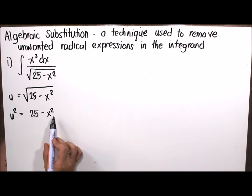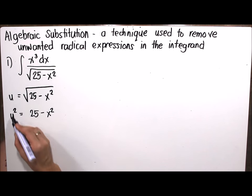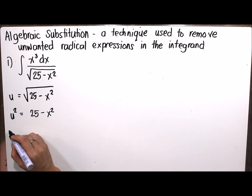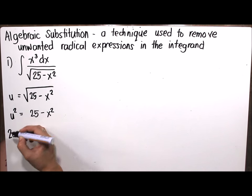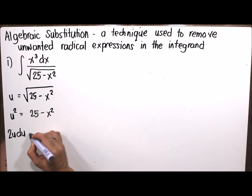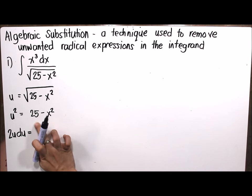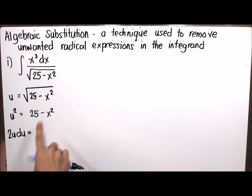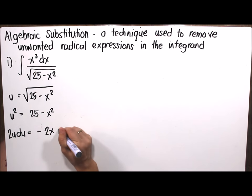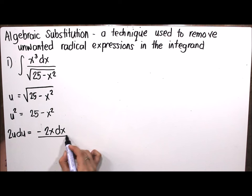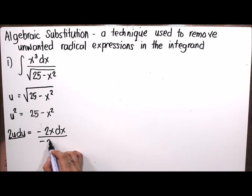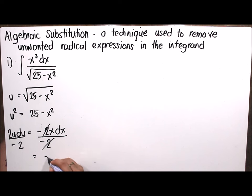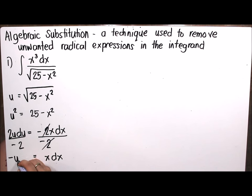Since the equation no longer contains a radical sign, we differentiate it. The derivative of u squared is 2u du, so we have 2u du equals the derivative of 25 minus x squared, which gives us negative 2x dx. Dividing both sides by negative 2, we get x dx equivalent to negative u du.